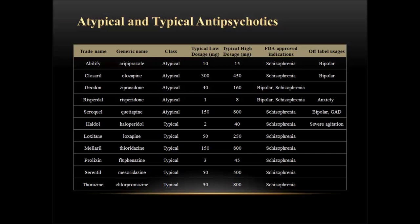Taking a look at the atypical and typical antipsychotics, probably the more common ones here would be Abilify, mainly used for schizophrenia and also bipolar. Clozaril is usually the last resort for treatment-resistant schizophrenia and can also be used for bipolar. Geodon and Risperdal are used for bipolar and schizophrenia, and Risperdal off-label can be used for anxiety. Seroquel is used for schizophrenia, bipolar, and off-label for generalized anxiety disorder. Haldol is a typical antipsychotic still used fairly often for schizophrenia and severe agitation — usually seen more in inpatient than outpatient settings. The most popular typical antipsychotics, Prolixin and Thorazine, are used to treat schizophrenia.